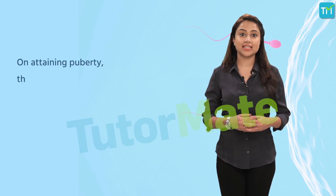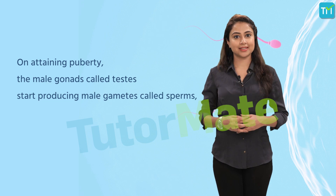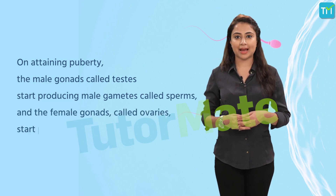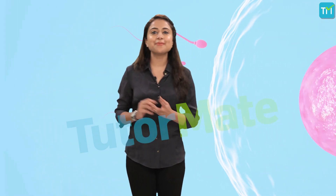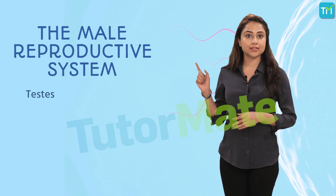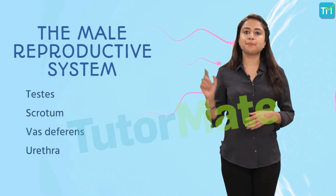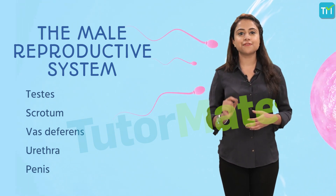In attaining puberty, the male gonads called testes start producing male gametes called sperms, and the female gonads called ovaries start producing female gametes called ova. The male reproductive system consists of testes, scrotum, vas deferens, urethra, and penis, and each of these organs has specific functions in the system.